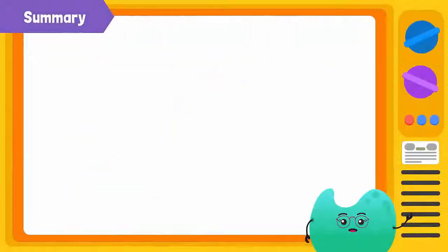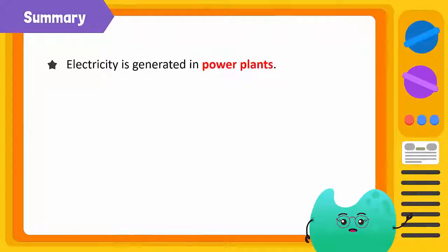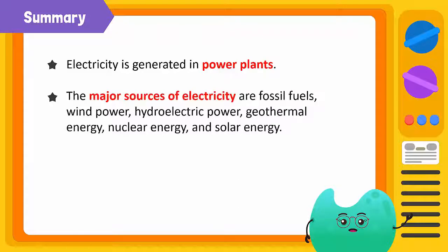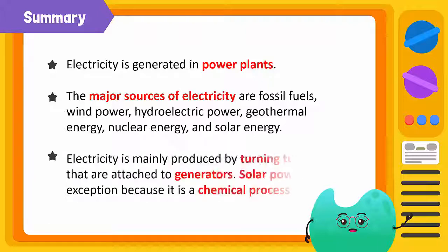Today, we have learnt that electricity is generated in power plants. The major sources of electricity are fossil fuels, wind power, hydroelectric power, geothermal energy, nuclear energy, and solar energy. Electricity is mainly produced by turning turbines that are attached to generators. Solar power is an exception because it is a chemical process.